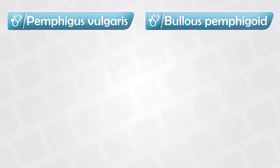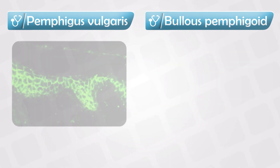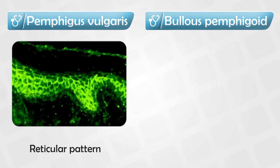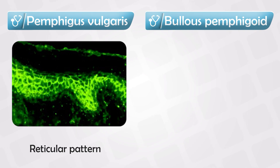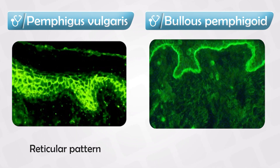Under immunofluorescent light, Pemphigus vulgaris shows a reticular pattern, which makes sense because the antibodies are distributed all around the cells. In Bullous pemphigoid we see a linear pattern, which also makes sense because the involvement is along the basement membrane.